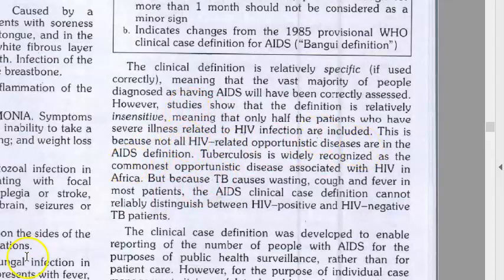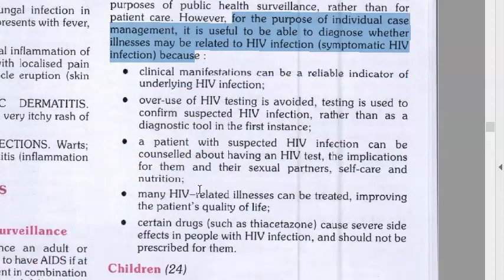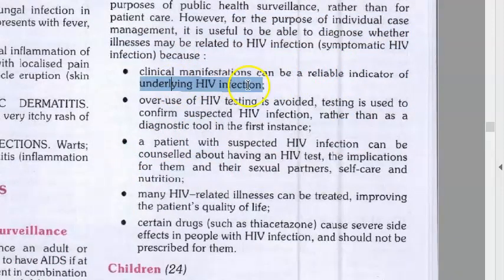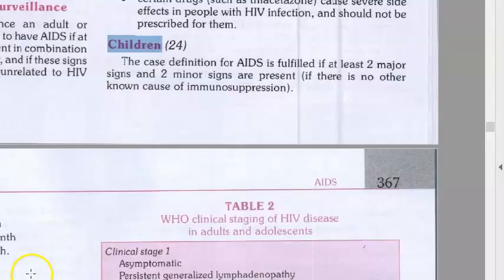What they are looking at here are clinical manifestations which can be a reliable indicator of an underlying HIV infection. This is for surveillance — under surveillance they want to find out if this person has AIDS. For children, at least two major signs and two minor signs are required.